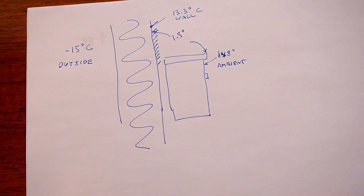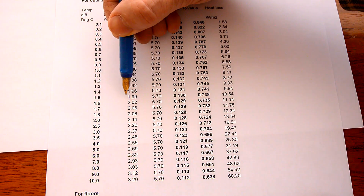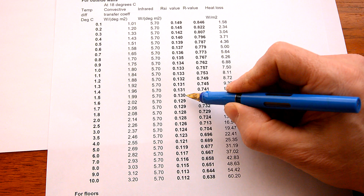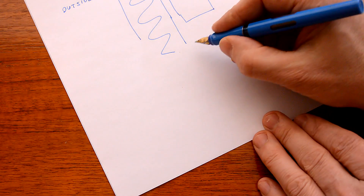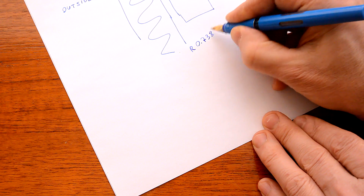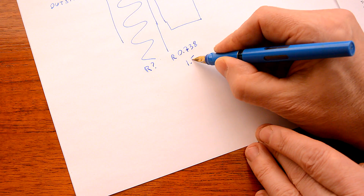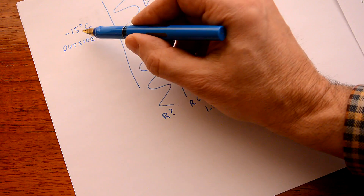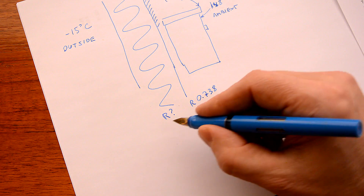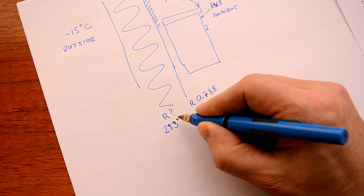That boundary layer also has an R-value. Looking up the R-value for this boundary layer on the spreadsheet I put together — at a 1.5 degree temperature difference, the R-value of the boundary layer is 0.738. We have R 0.738 with a 1.5 degree temperature difference. And through the wall, we're going from 13.3 degrees to minus 15 degrees — about 28.3 degrees temperature difference.